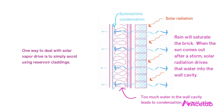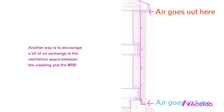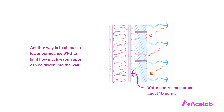One way to deal with solar vapor drive is to simply not use a reservoir cladding. But if we are using a reservoir cladding, we have two options. We can encourage a lot of air exchange in the ventilation space between the cladding and the WRB to flush that moisture out before it gets into the wall. But if that cavity is too small, or clogged with mortar droppings, we won't get enough drying. Another option is to control the permeance of the WRB — a less permeable membrane can prevent wetting and reduce the need for air exchange, tolerating a smaller cavity.